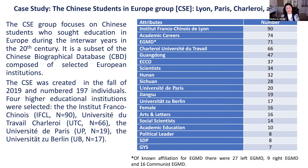I am not going into the Chinese biographical database in depth here — there is a paper that explains it, including how evidence was gathered in archives. Regarding the Chinese students in Europe group: this was a workshop I gave at Tsinghua University before COVID. It centers on institutions in Lyon, Paris, Charleroi in Belgium, and Berlin, Germany. These were students who sought education in Europe during the interwar years of the 20th century. In my database, there are about 1,000 students who went to Europe during the 1920s.